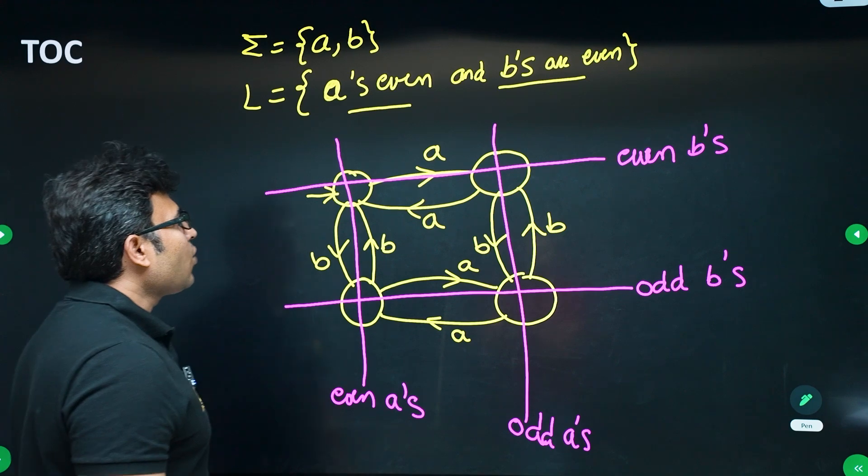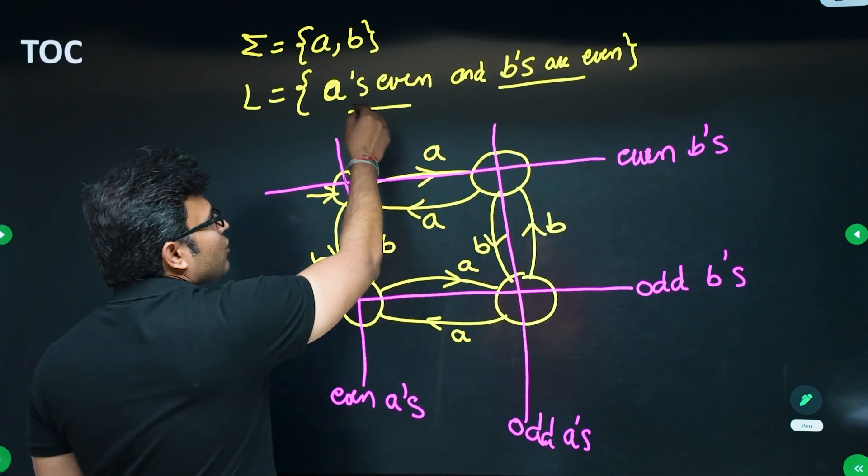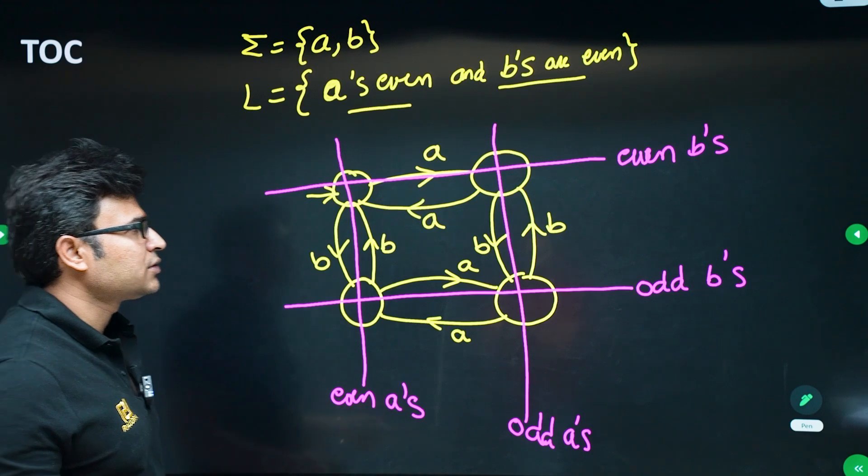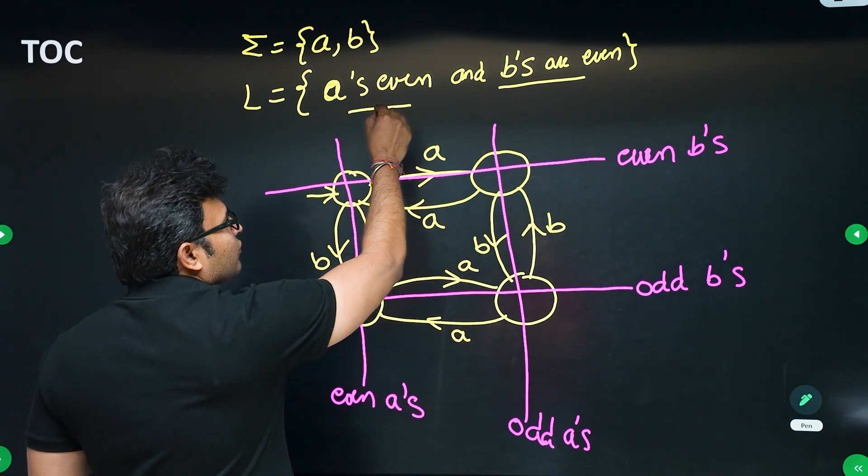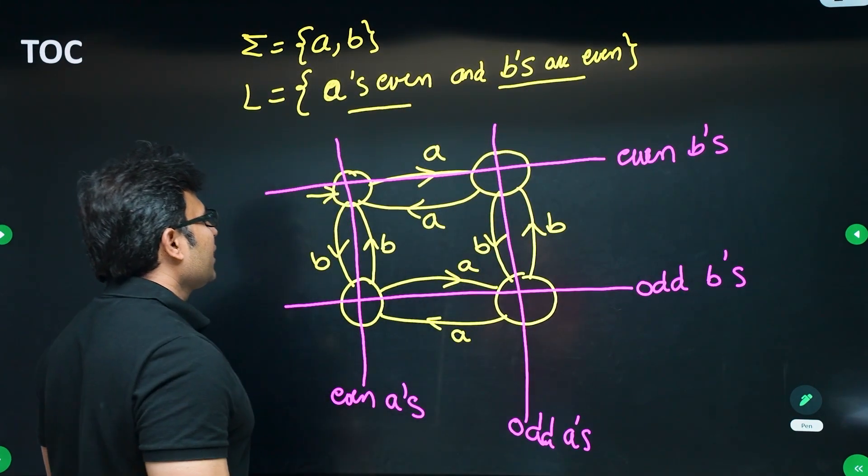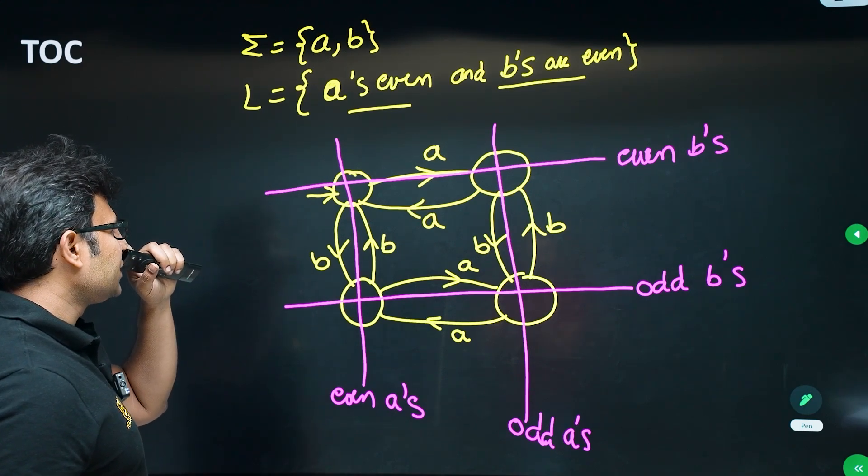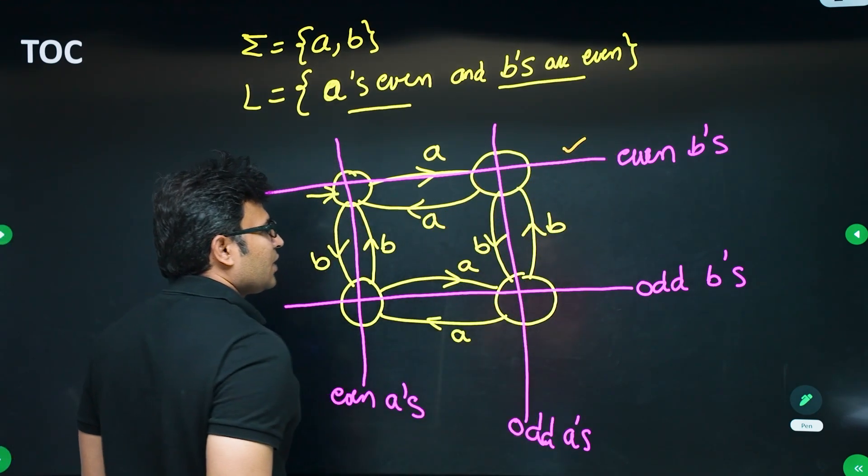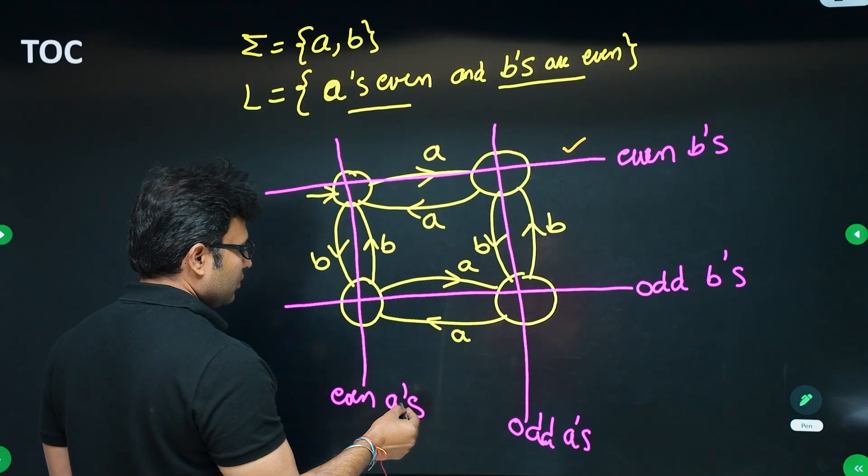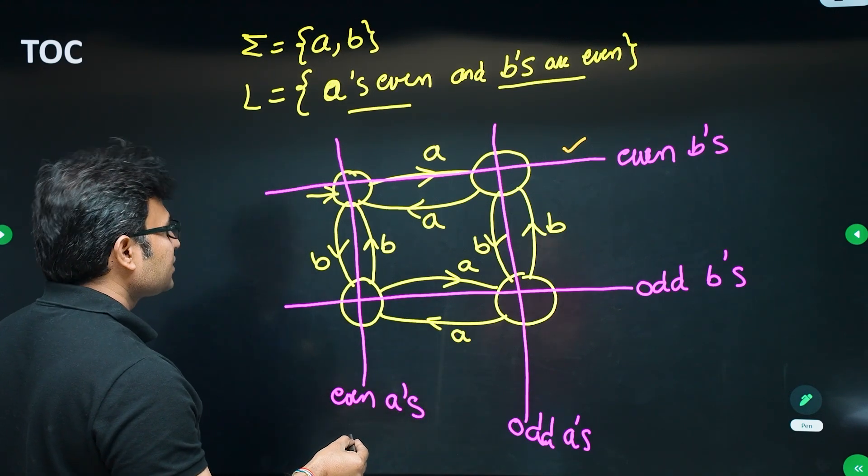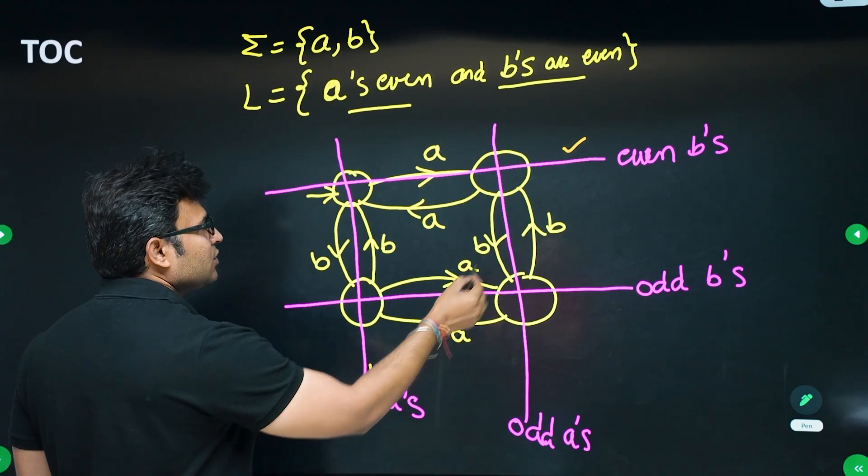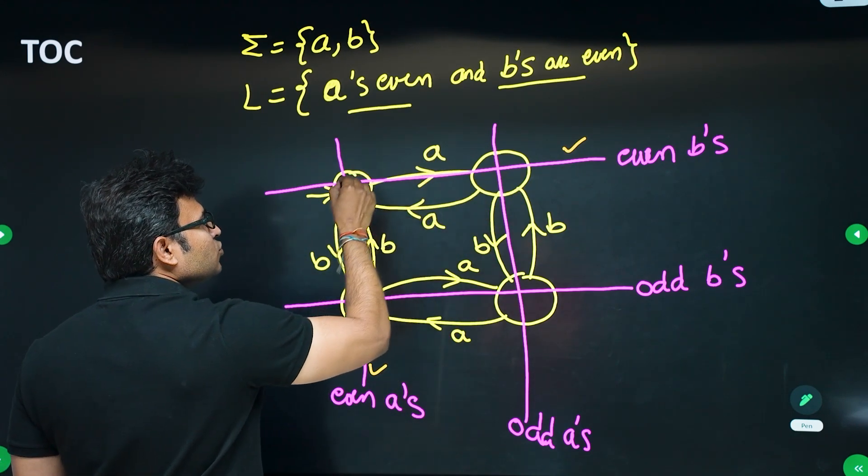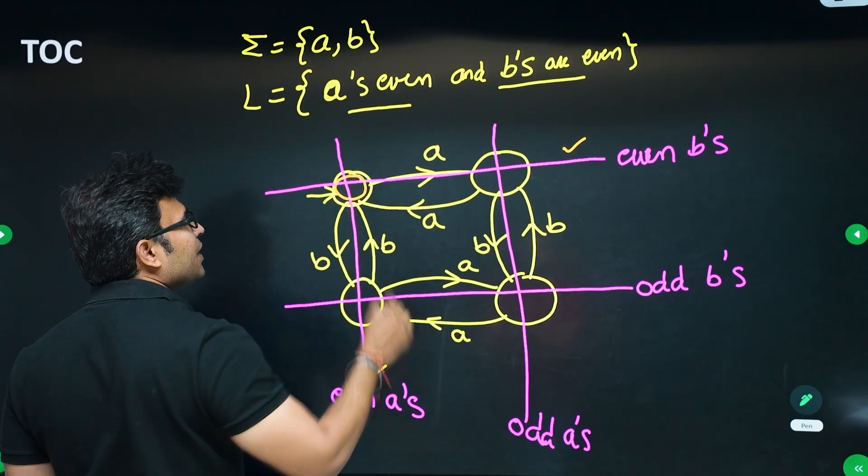Now what is the question? A's have to be even and b's have to be even. Even number of a's is this line, even number of b's is this line. What is the intersection of these two lines? This.